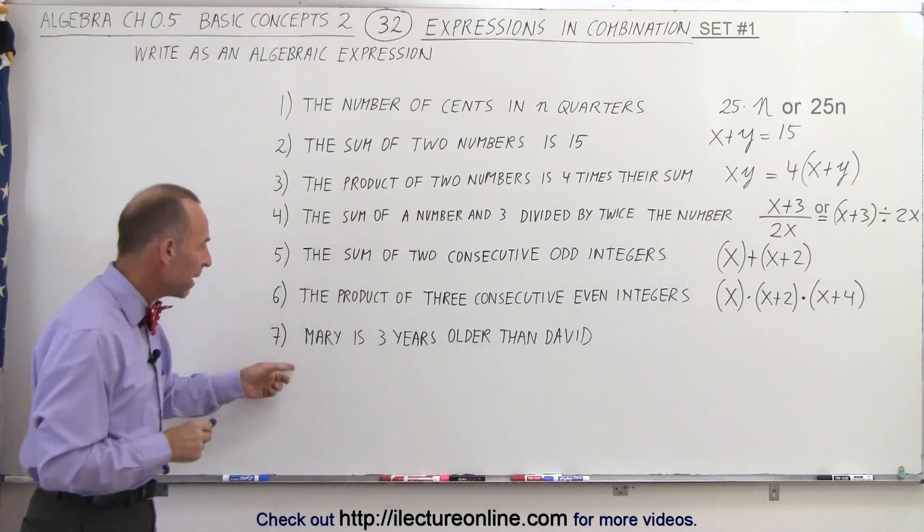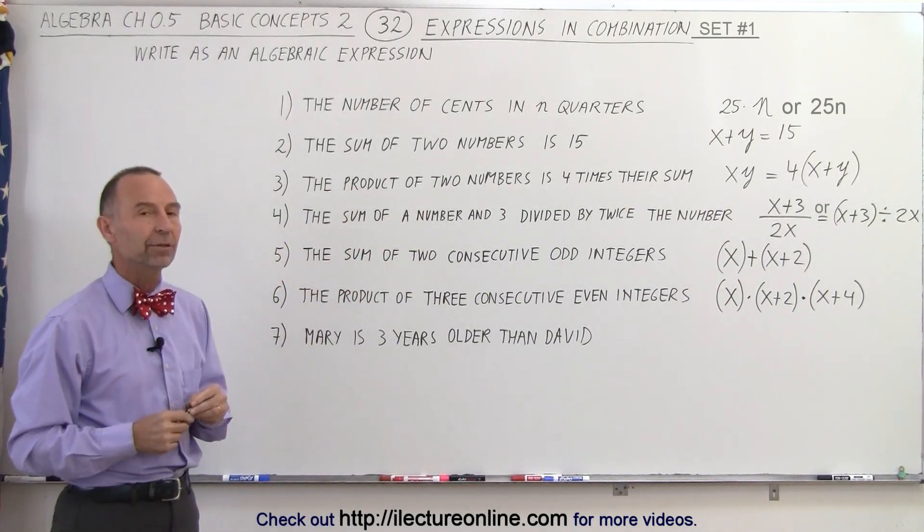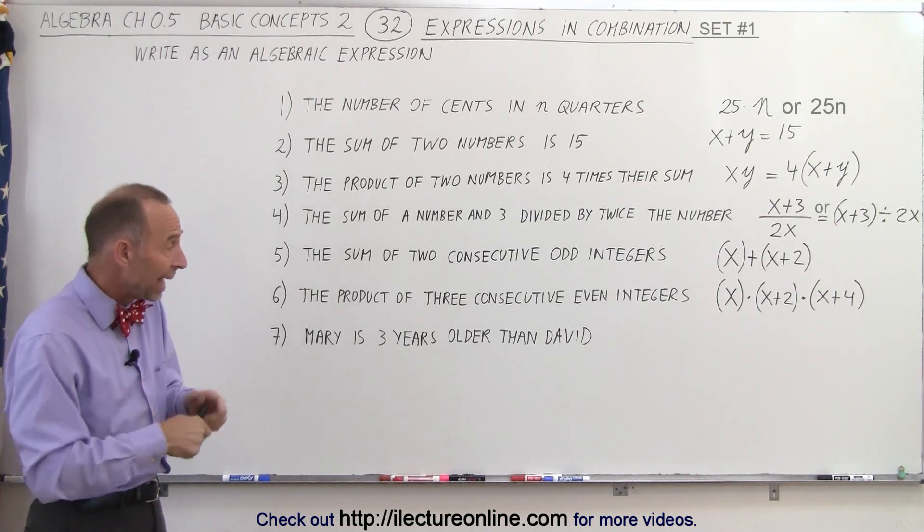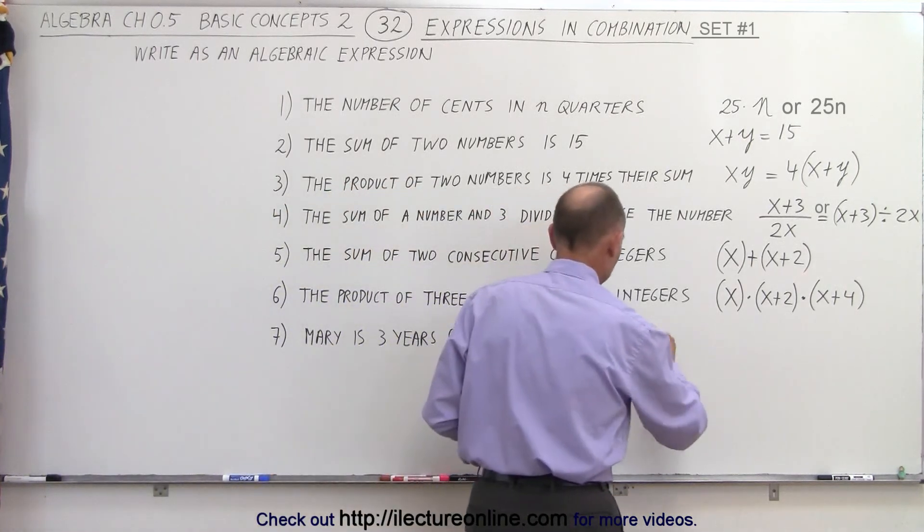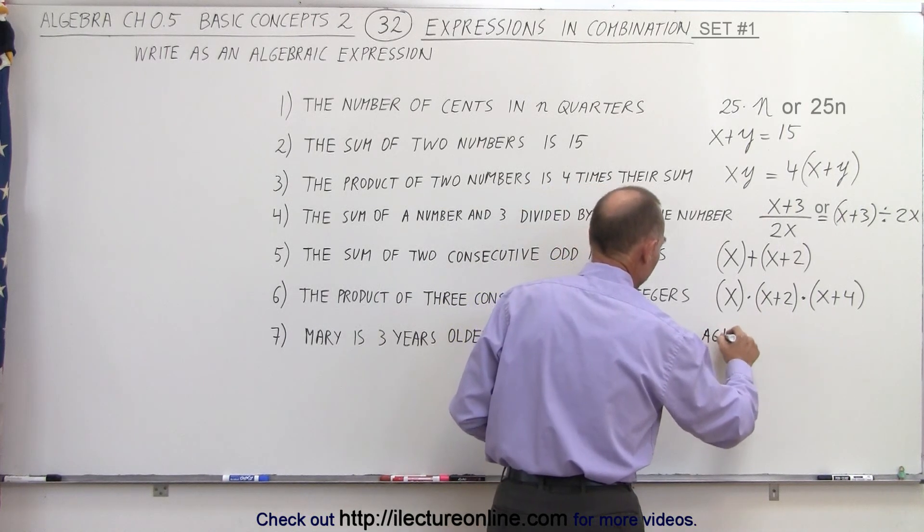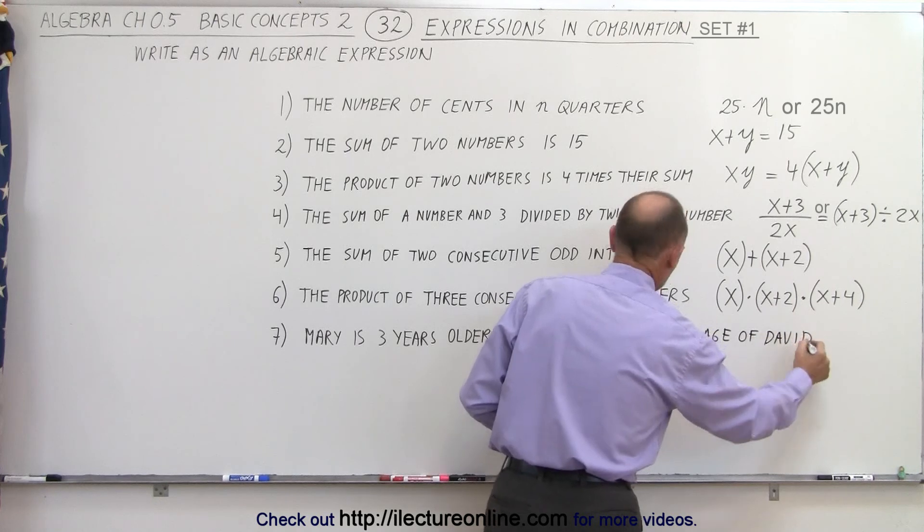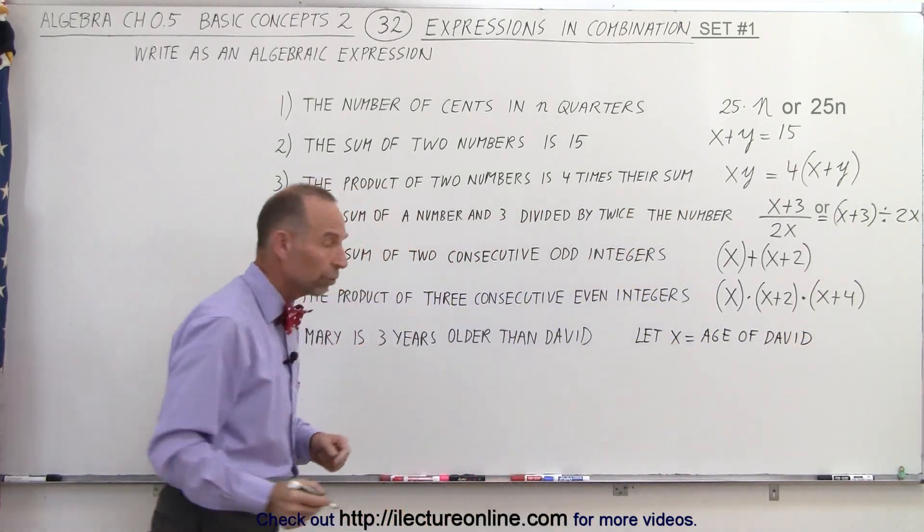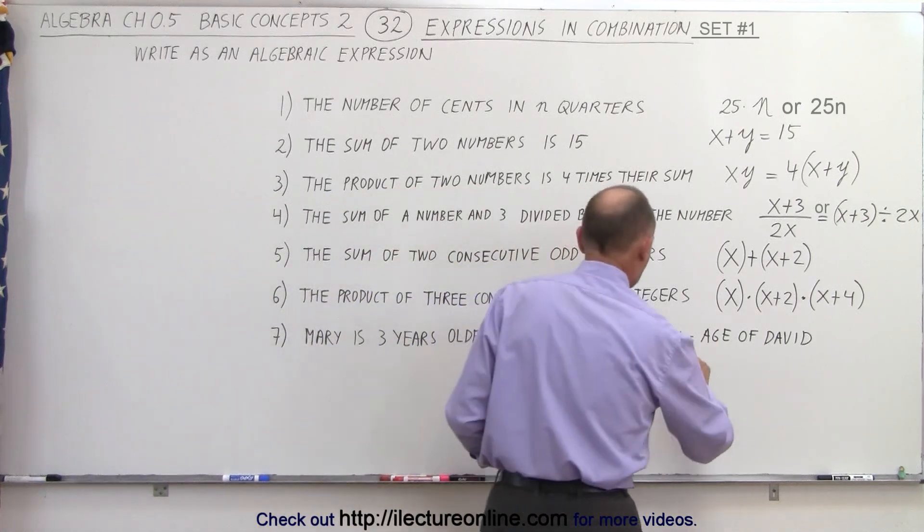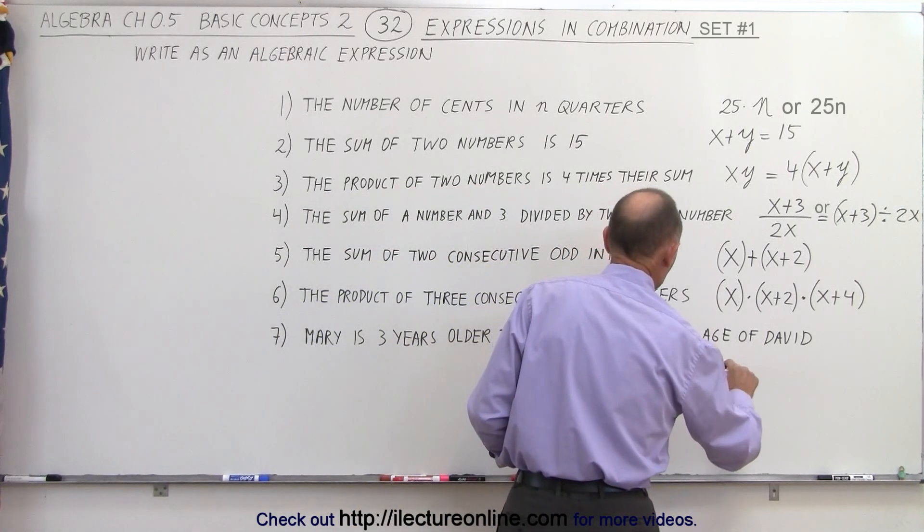Finally, Mary is three years older than David. So again, we use the concept that the smallest number will be x. So let x be the age of David. Let x equal the age of David. And then Mary is three years older. So three years older means we're going to add three to that. So x plus three is equal to the age of Mary.